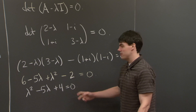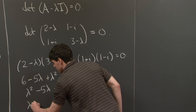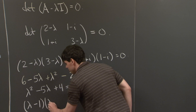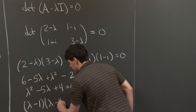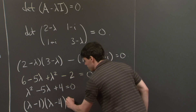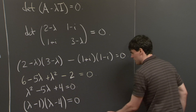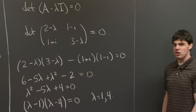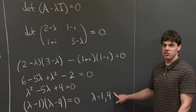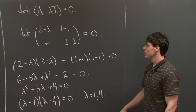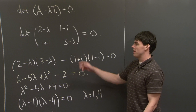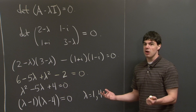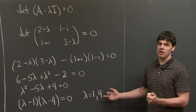We can factorize this equation into (lambda minus 1)(lambda minus 4), which gives us roots lambda equals 1 and lambda equals 4. One curious point to note is that the eigenvalues are real in this case — 1 and 4 are real — whereas the matrix we started with was complex. This is a general property of Hermitian matrices: even though they might be complex matrices, Hermitian matrices always have real eigenvalues.